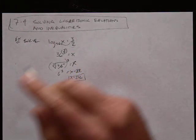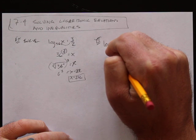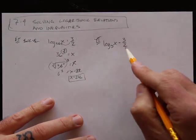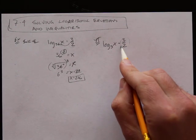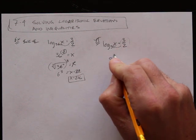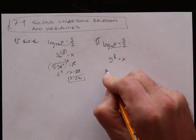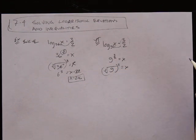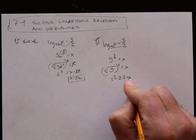216. You try one now: log base 9 of x equals 3 over 2. I'm going to take this 3 over 2 and jam it up in there, so I've got 9 to the power of 3 halves equals x. The denominator goes right here, the numerator goes out here. The square root of 9 is 3. 3 cubed is 27. 27 equals x.